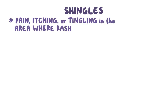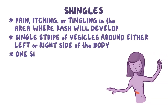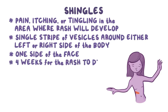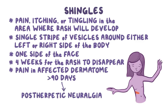In shingles, there's typically pain, itching, or tingling in the area where the rash will develop. The rash itself is usually a single stripe of vesicles around either the left or the right side of the body, or on one side of the face. It usually takes four weeks for the rash to disappear, but there can be pain in the infected dermatome lasting more than 90 days, called post-herpetic neuralgia.